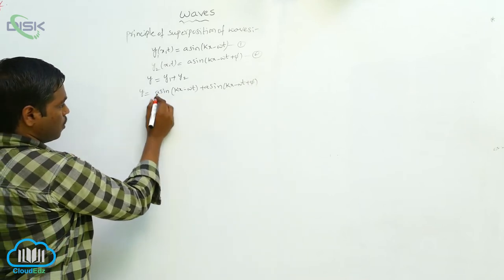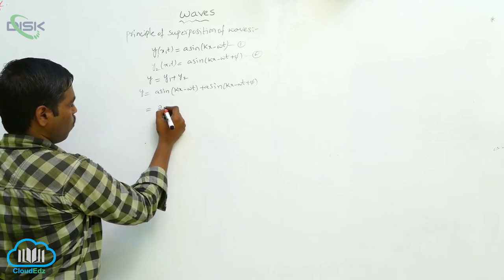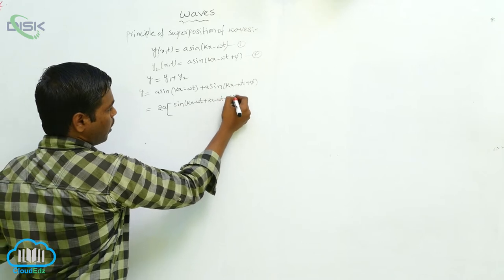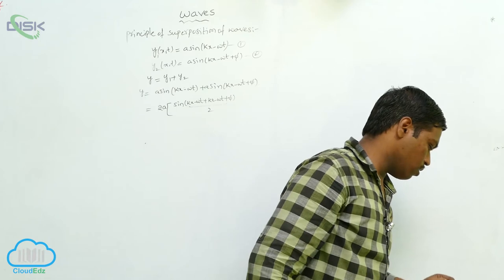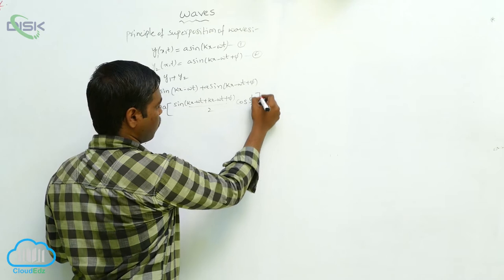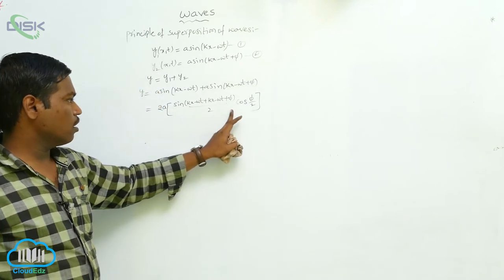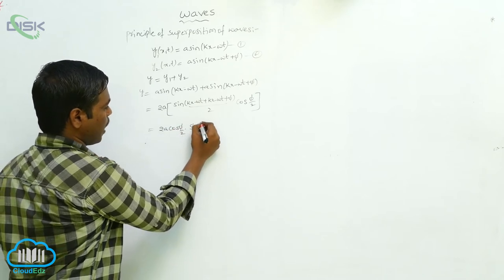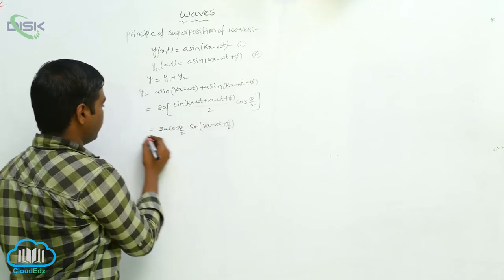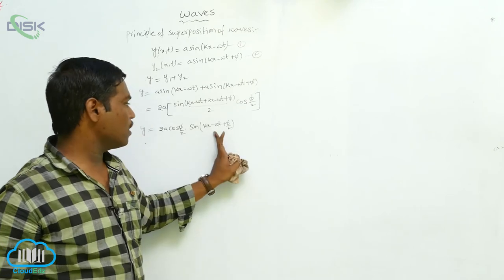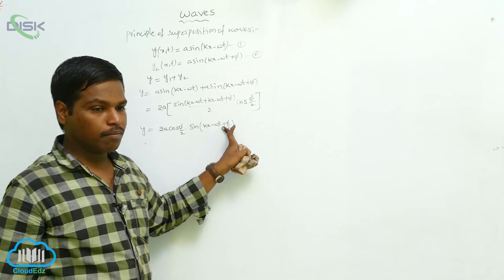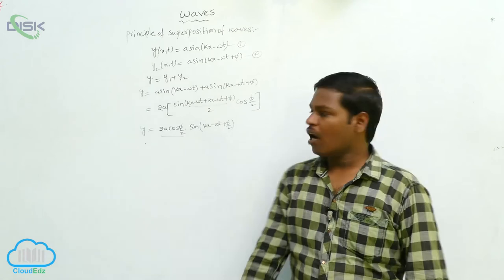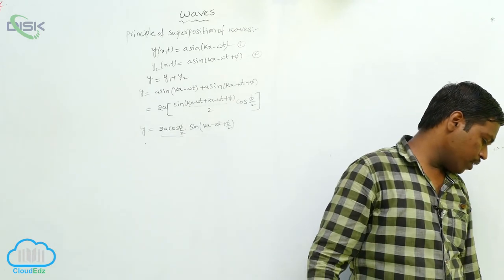Taking a as common we get 2a · sin((kx − ωt) + (kx − ωt + φ)/2) · cos(φ/2). This simplifies to 2a cos(φ/2) · sin(kx − ωt + φ/2). This is the resultant displacement, where 2a cos(φ/2) is the amplitude of the resultant wave.